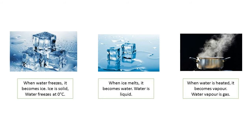بچو یہ مثال ہے solid سے liquid میں convert ہونے کی — یعنی ice solid ہے اور جب وہ پگھلتا ہے تو پانی بن جاتا ہے، اور پانی یعنی water liquid ہے۔ بچو اسی طرح جب ہم پانی کو hundred degree centigrade پر boil کرتے ہیں تو وہ vapor بن جاتا ہے اور vapor gas ہوتا ہے — یہ مثال ہے liquid سے gas میں convert ہونے کی۔